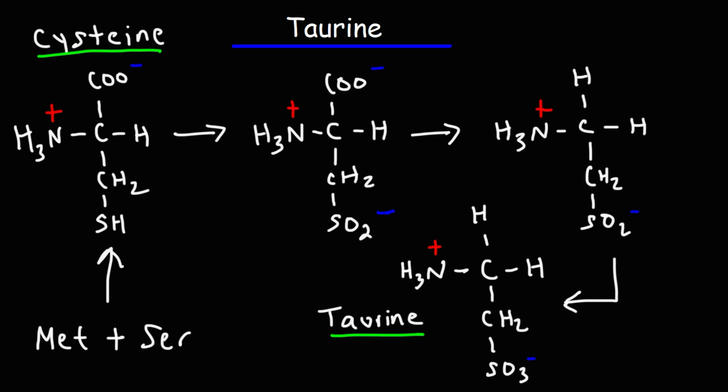But in the first step in the synthesis of taurine from cysteine, oxygen is used to oxidize the thiol group into an SO2 minus group, producing a molecule known as cysteine sulfonate.